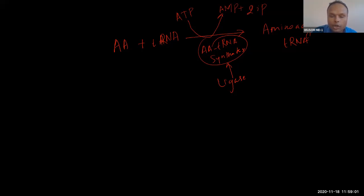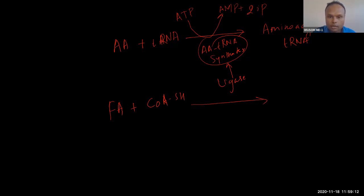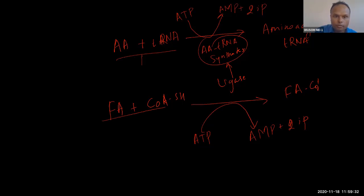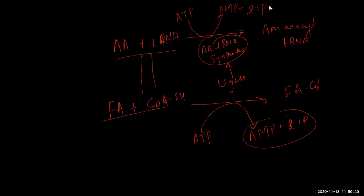Can you see the same type of reaction here? Fatty acid plus Coenzyme A (CoA-SH) plus ATP → AMP plus two high-energy phosphates → Fatty acyl-CoA. The same type of reaction — the same utilization of ATP. So this is the activation step, and this is also an active molecule.